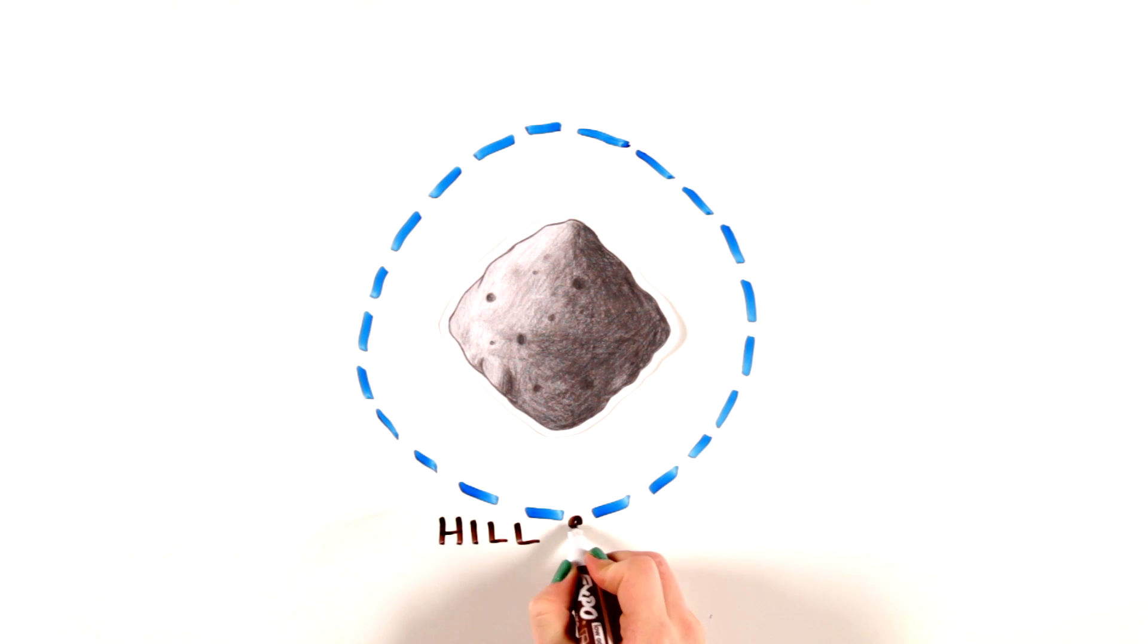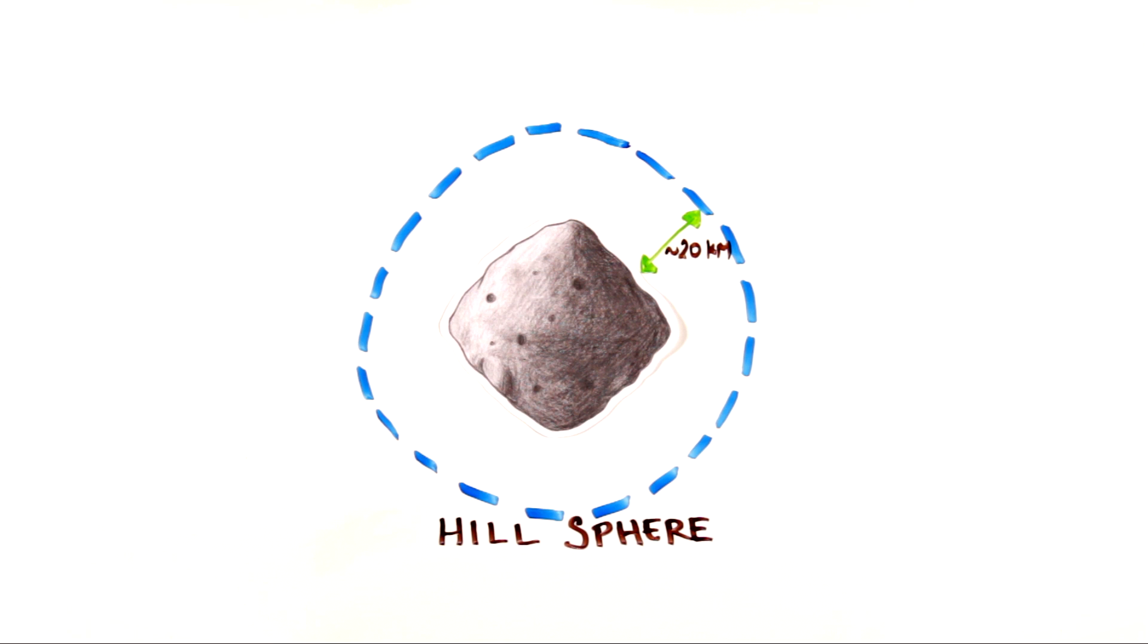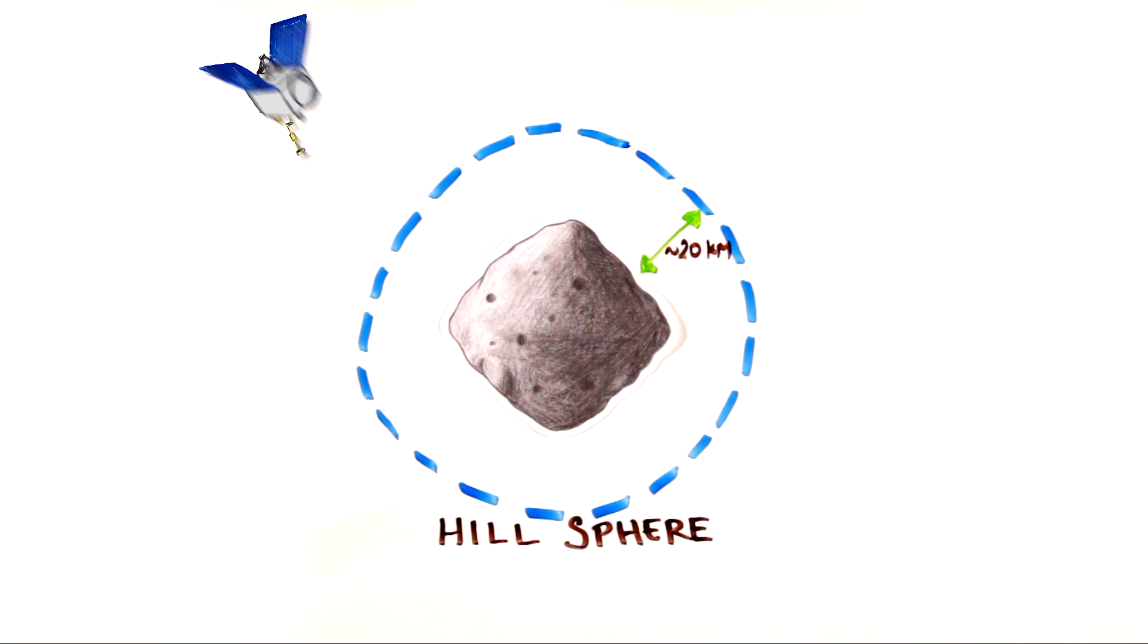Something as small as Bennu only has a sphere of influence that extends 20 to 30 kilometers out from its surface. Bennu's small sphere of influence is unique because many mission spacecraft operate around bodies that have a significant gravitational field.